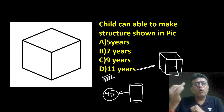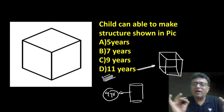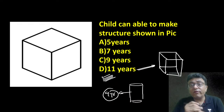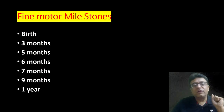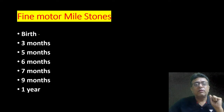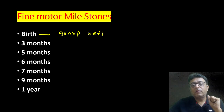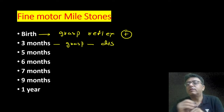Now let's recall fine motor milestones systematically. What is scribbling, vertical stroke, pincer grasp, palmer grasp, circle, square, cubes, gate — we remember all in a systematic manner. At birth: grasp reflex present. At three months: grasp reflex disappear.